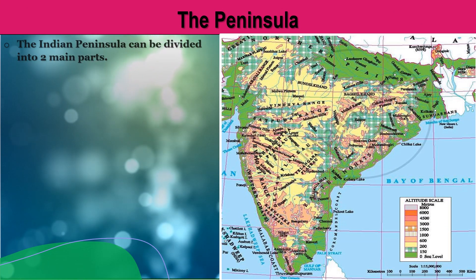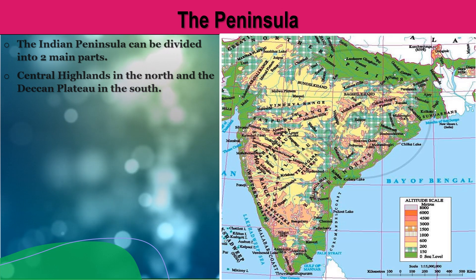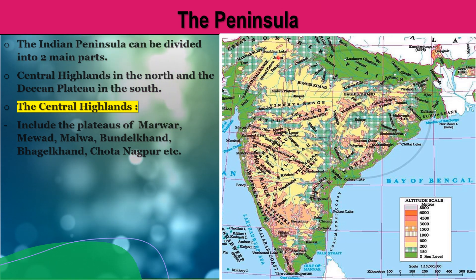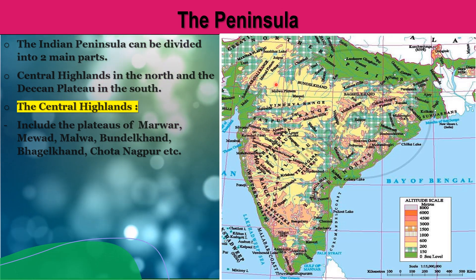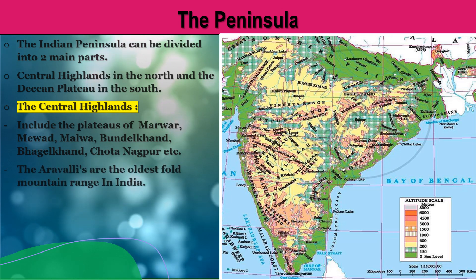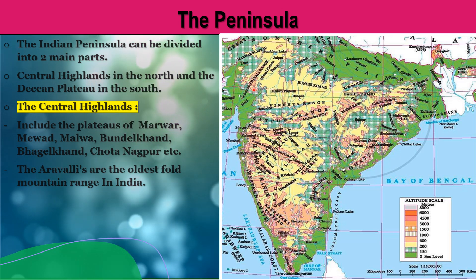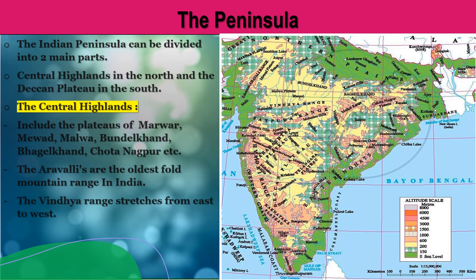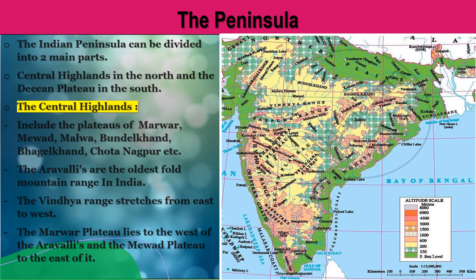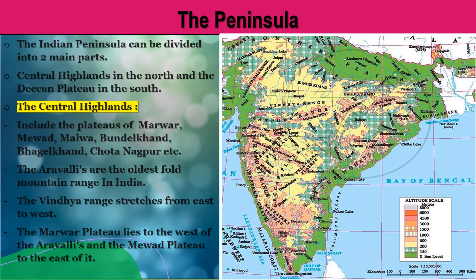The Indian peninsula can be divided into two main parts: the central highlands in the north and the Deccan plateau in the south. The central highlands include the plateaus of Marwar, Mewad, Malwa, Bundelkhand, Baghelkhand, Chota Nagpur, etc. The Aravlis are the oldest fold mountain range in India. The Vindhya range stretches from east to west. The Marwar plateau lies to the west of the Aravli hills, and the Mewad plateau lies to the east of the Aravli hills.